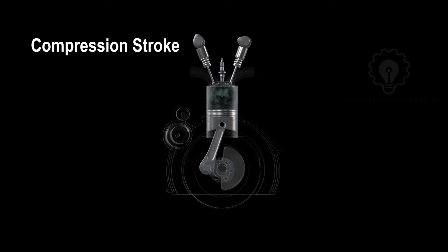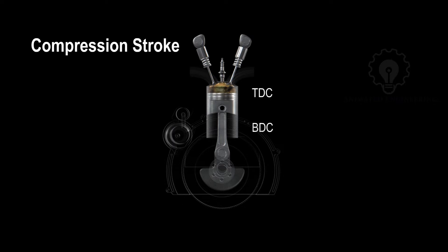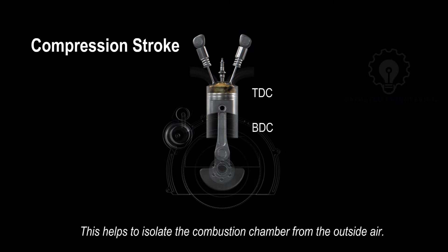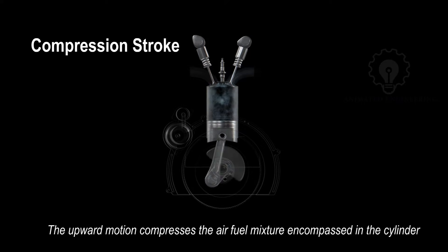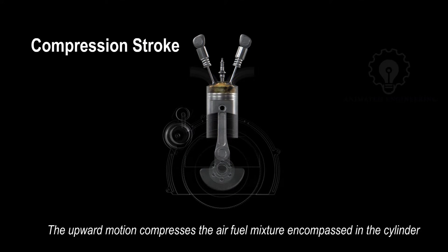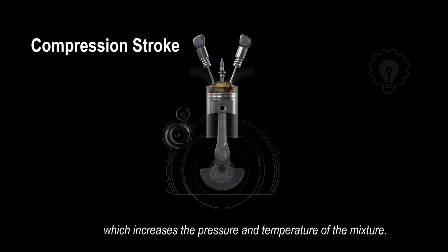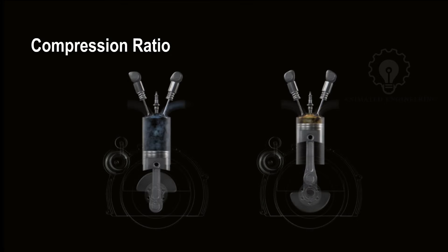Compression stroke: the piston moves upwards from bottom dead center to top dead center. Both the intake and exhaust valves are closed, which helps to isolate the combustion chamber from the outside air. The upward motion of the piston compresses the air-fuel mixture encompassed in the cylinder, which increases the pressure and temperature of the mixture. The difference between the volume of mixture sucked into the cylinder during an intake stroke and the fully compressed volume is called the compression ratio.